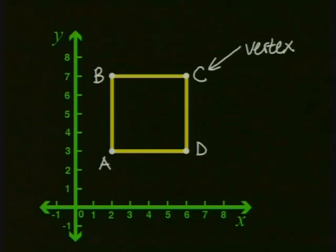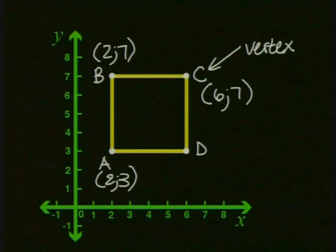We can tell someone exactly where this is by writing down the coordinates of each vertex. A is 2, 3. B is 2, 7. C is 6, 7. And D is 6, 3.